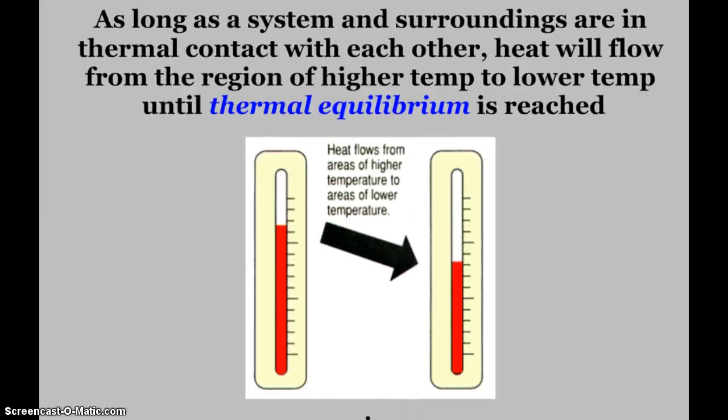As long as the system and the surroundings are in thermal contact with each other, heat will always flow from the region of higher temperature to lower temperature until thermal equilibrium is reached. When we do a specific heat lab, we put hot metal into colder water, and the heat will flow from that hot metal into the colder water until the temperature levels out and thermal equilibrium has been reached.